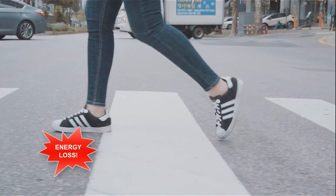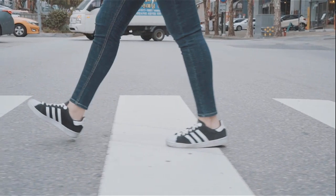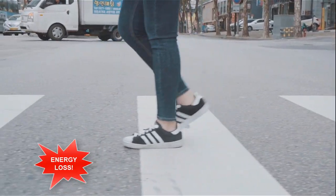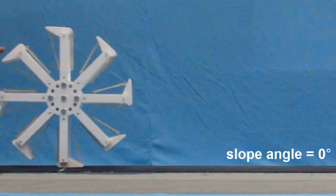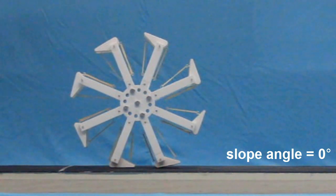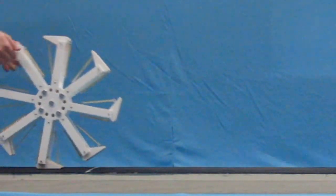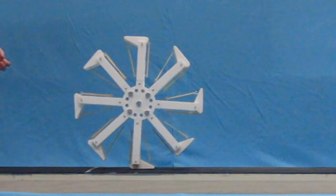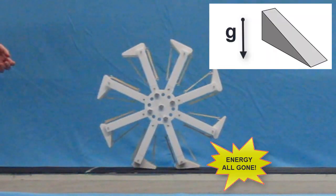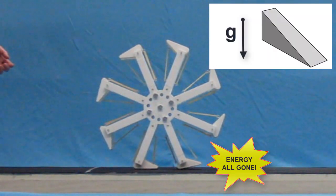The slope is an important component to the ability of the wheel to walk because energy is not conserved when the foot collides with the ground. If I try to make the walking wheel walk on a flat surface, it fails because there is no energy input to make up for the energy losses that come with foot collisions. Walking down a slope allows for energy input from gravity.